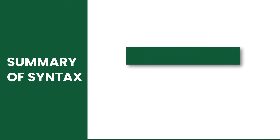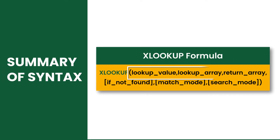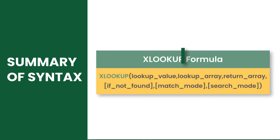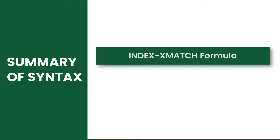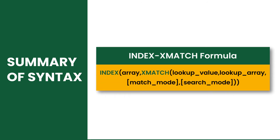XLOOKUP runs on six arguments where the first three are required and the others are optional. For INDEX/XMATCH, the two functions work as a lookup function when used together.